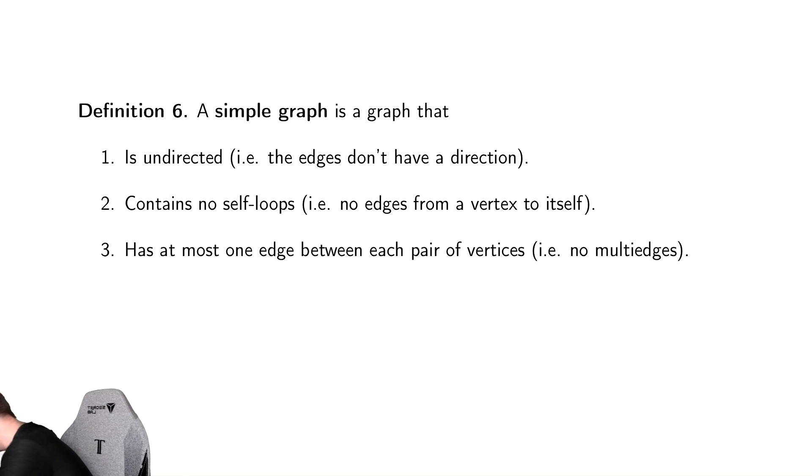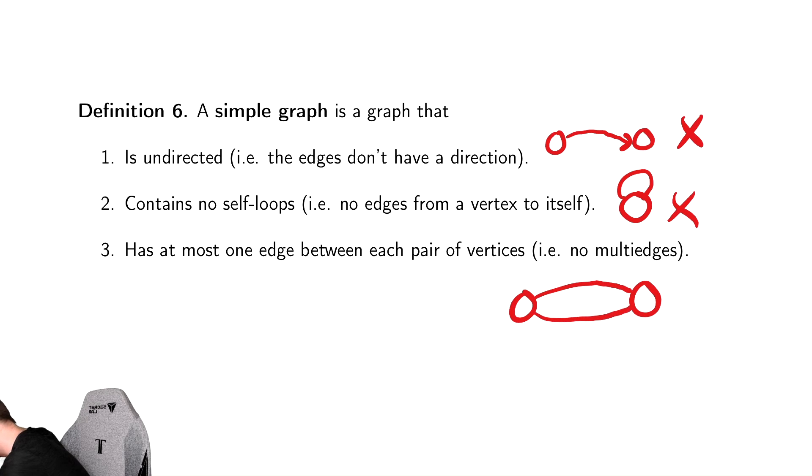So no directionality means that you can't have arrows, so that's banned. No self-loops means you can't have edges which connect a vertex to itself. That is banned. And no multiple edges between vertices means you can't have two different edges between two vertices. That is also banned.